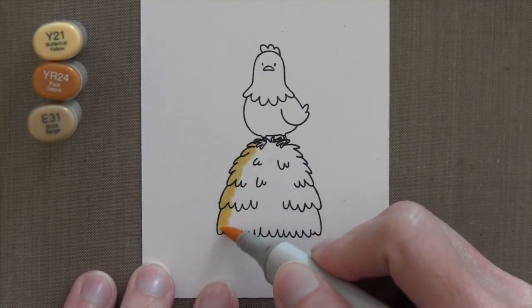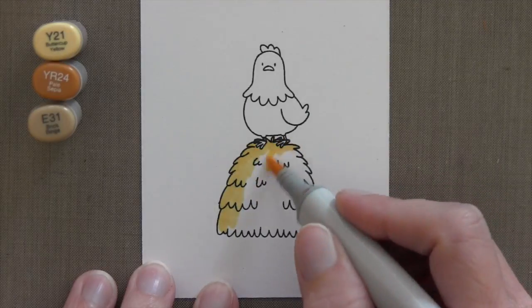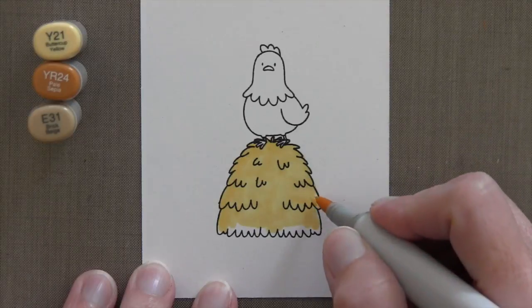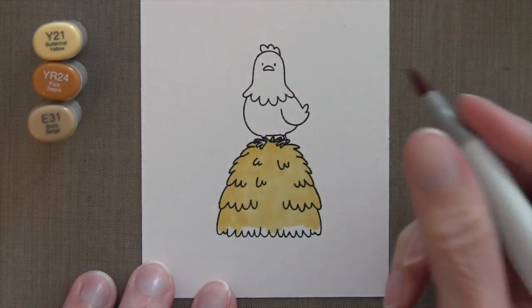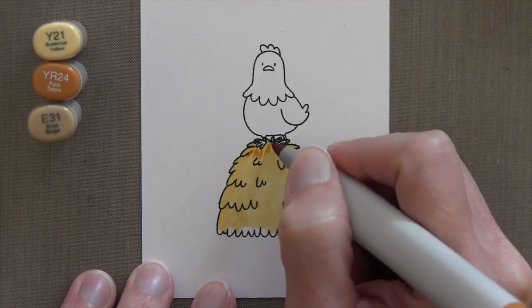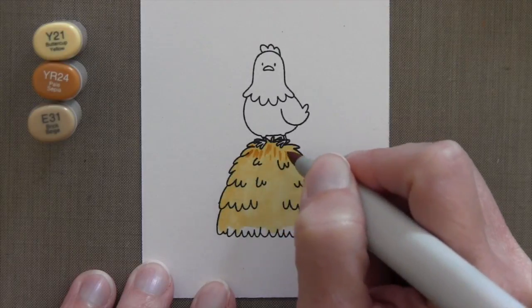For the hay I started off with an olive Y21 color just to provide a base. I'm not going to worry too much about going all the way to the bottom because I'm going to die cut this and then I took the YR24 which is kind of a mustardy yellow color darker than the hay.